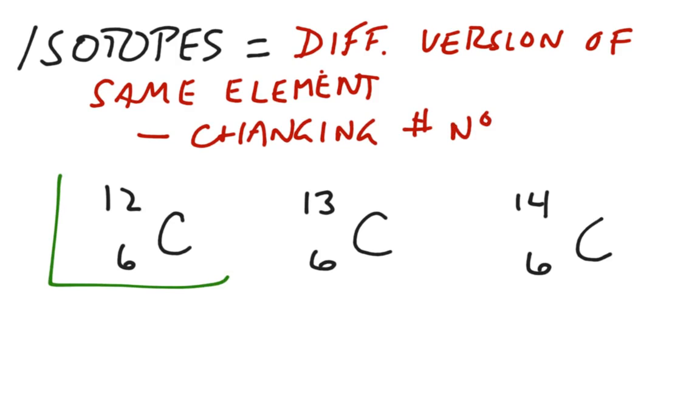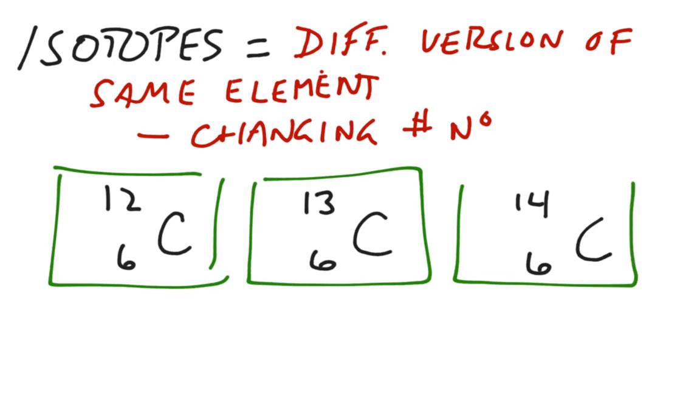Here are listed three different versions of carbon. All three of these versions naturally occur, and all of them have the same number of protons and electrons. All of them contain six protons and electrons. The only difference will be the number of neutrons.